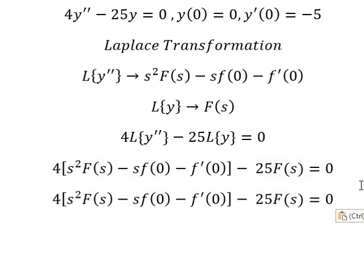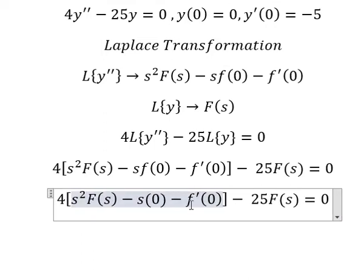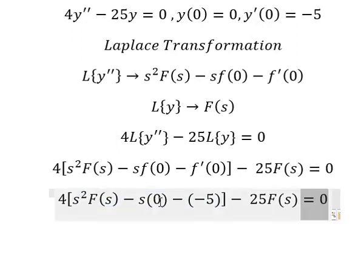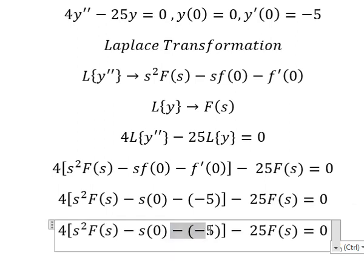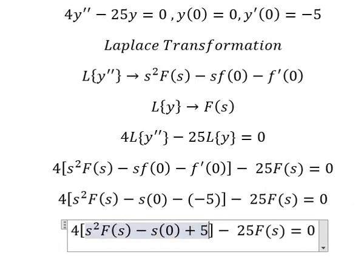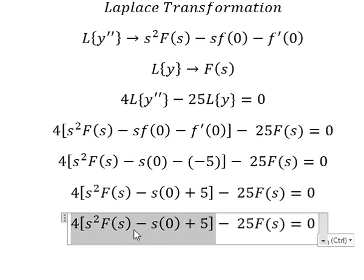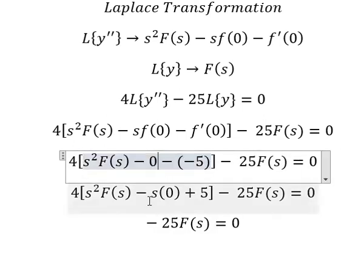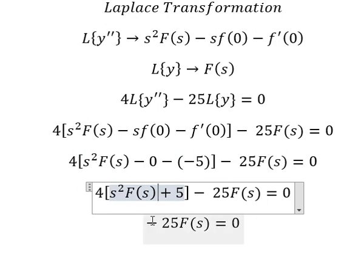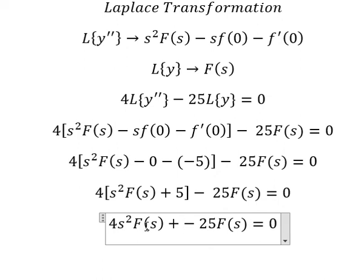Now we have the initial conditions. This one — zero — we put in here. This one — negative five — I will put in here. So negative times negative gives us positive five. Now we need to expand this one, and this term becomes zero.